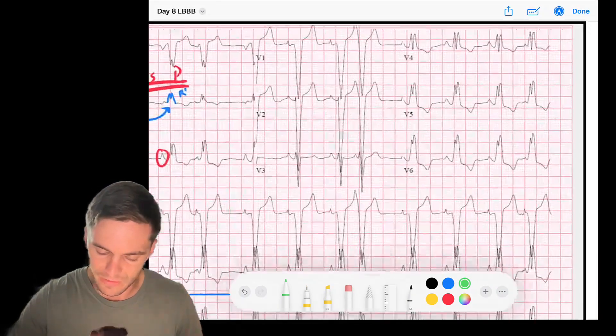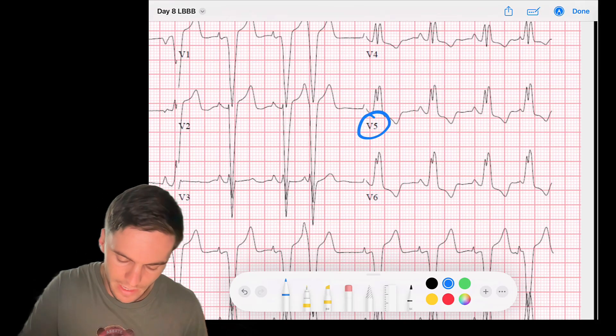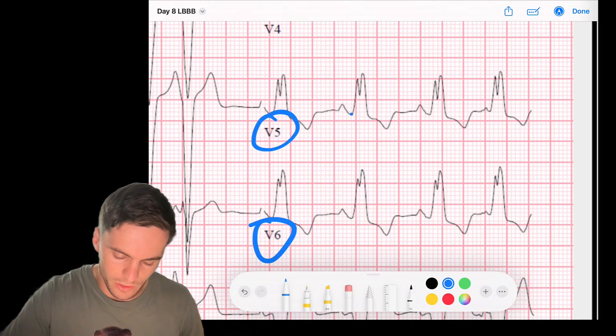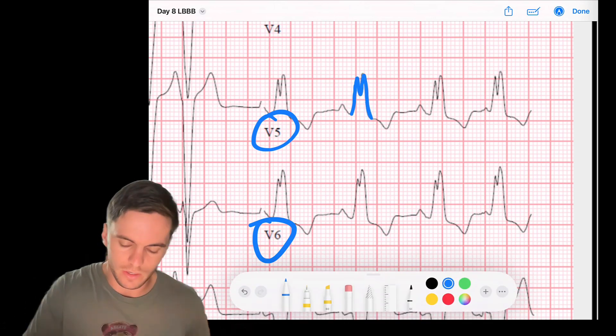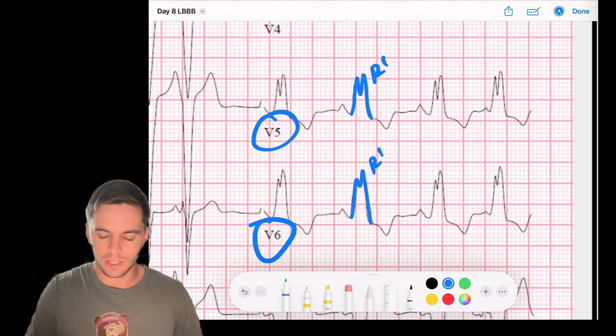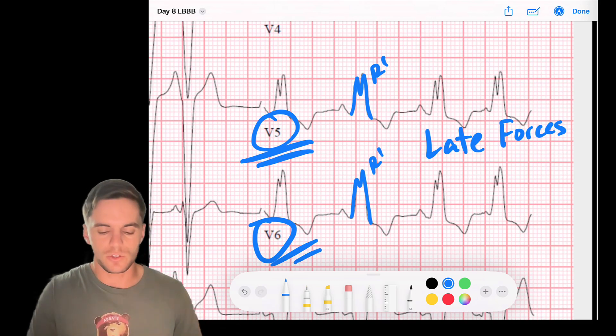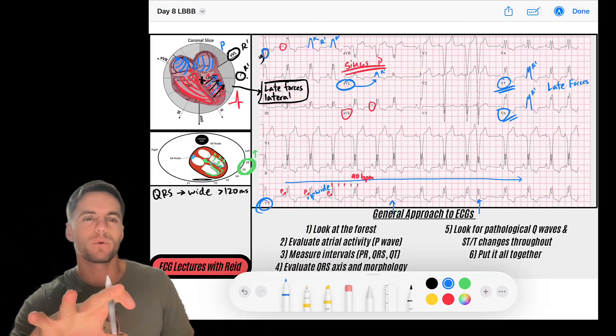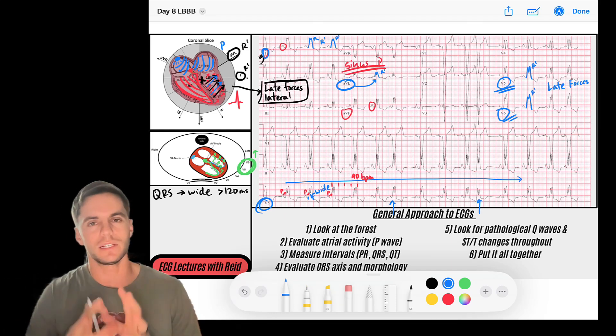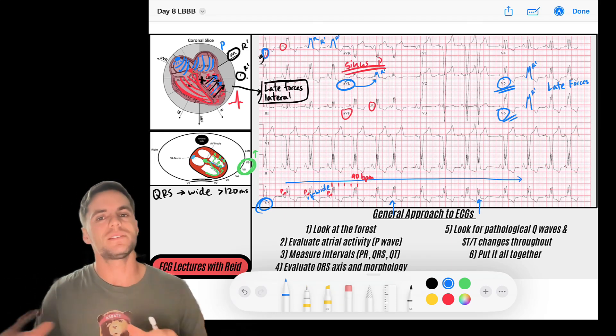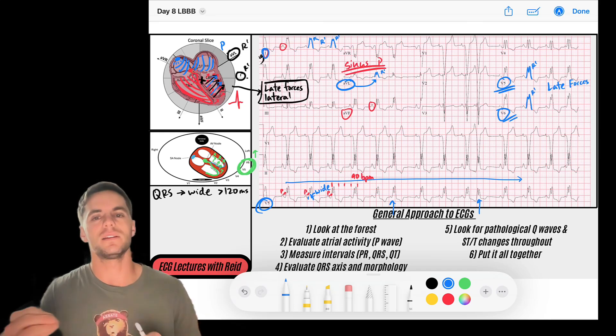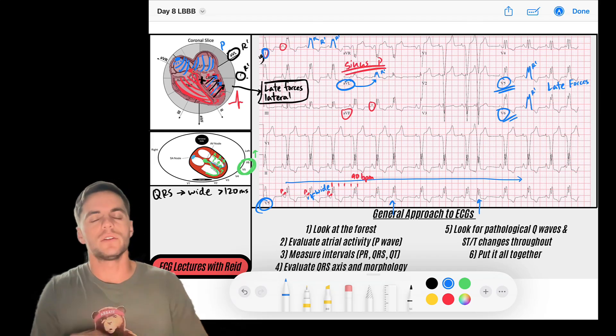And if I look at V5 and V6, sometimes you can see that here. Notice we have our nice upstroke. We should expect for it to come down, but then we have another later R prime, just like that in V6. Oh, there's the later one, that R prime. That tells me that there are late forces heading towards V5 and V6. So I'm starting to think, why would there be delayed forces towards the left side of the heart? It could be because the left bundle is blocked. And so rapid signal is not getting to the left ventricle. It's actually going to be delayed signal causing QRS widening, and there's R prime forces.